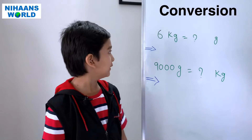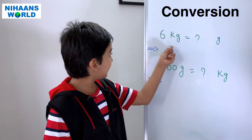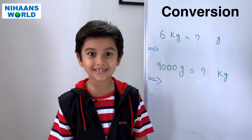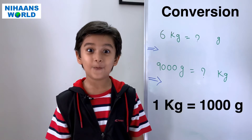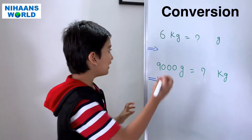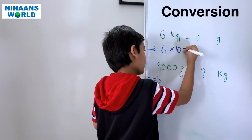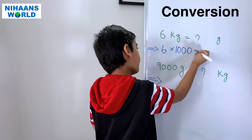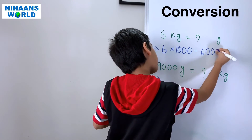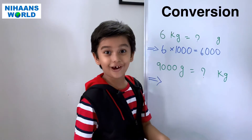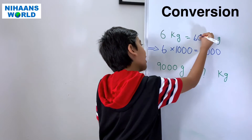Let's convert kilograms to grams and grams to kilograms. How many grams is 6 kilograms? As we know, 1 kilogram is equal to 1000 grams, so we multiply: 6 multiplied by 1000 is equal to 6000. So, 6 kilograms is equal to 6000 grams.